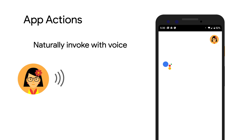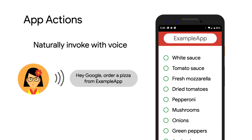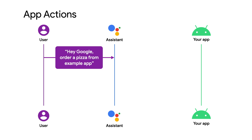Since App Actions is needed to integrate widgets with Assistant, let's start there. App Actions is how you can integrate Google Assistant into your Android app, and is how end users can launch and control Android apps with their voice. So when a user says, hey Google, order pizza from example app,